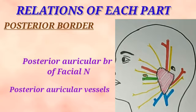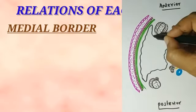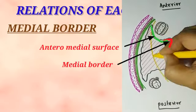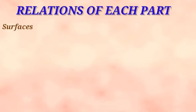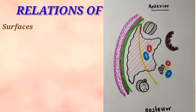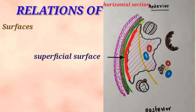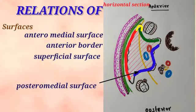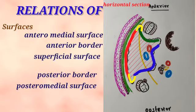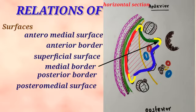The posterior border rests on the sternocleidomastoid muscle. The medial border separates the anteromedial surface from the posteromedial surface of the parotid gland and is related to the wall of the pharynx — hence it is also known as the pharyngeal border. To see the surfaces of the parotid gland, we need a horizontal view. This picture represents the horizontal view showing the superficial surface and the anteromedial surface separated by the anterior border, and the posteromedial surface separated from the superficial surface by the posterior border. The medial border separates the posteromedial and anteromedial surfaces.